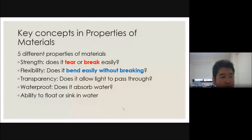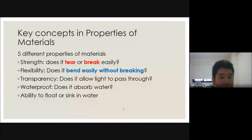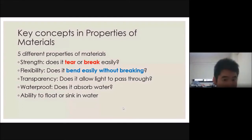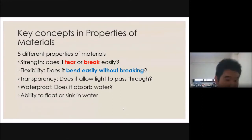There are five properties we have learned to go with the seven materials. For strength: something can either be carried or broken easily — glass is weak, paper is weak, but an iron bar is strong. If it bends easily it's flexible; if it doesn't bend easily it's stiff. For transparency: allows light to pass through or doesn't. For waterproofing: waterproof or not waterproof — otherwise absorbent. And finally: float or sink. Each property has specific adjectives to use.